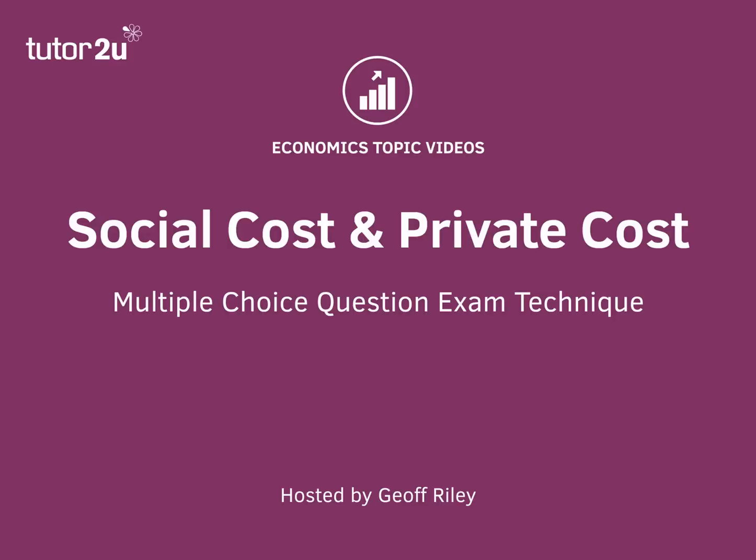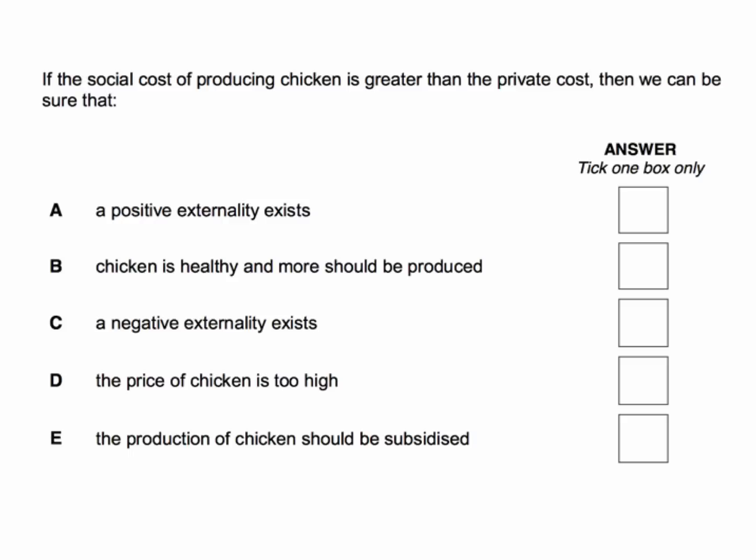Hi there. Here's a multiple choice question on the difference between social cost and private cost when there are negative externalities. Here's the question: if the social cost of producing chicken is greater than the private cost, then we can be sure that...